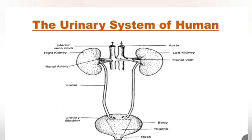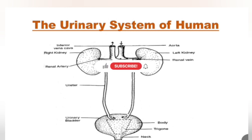The urinary bladder is a bag, pouch, or sac-like structure made of a thin, elastic membrane. It consists of various parts: the apex, the body of the urinary bladder, and in the center a triangular area known as the trigone.